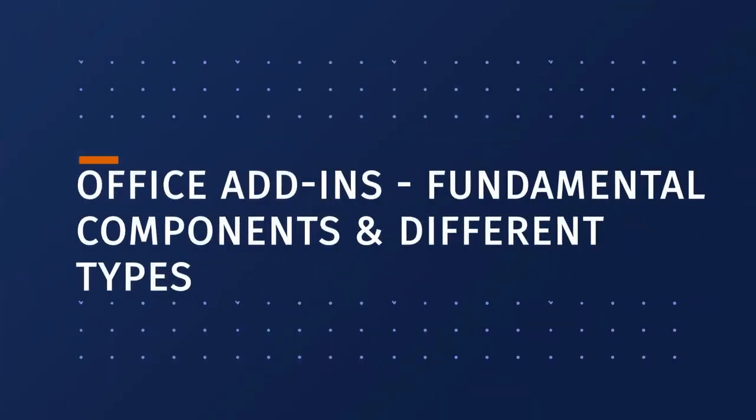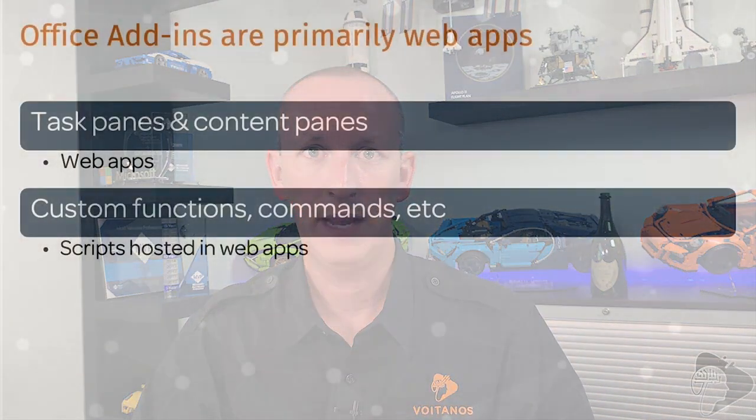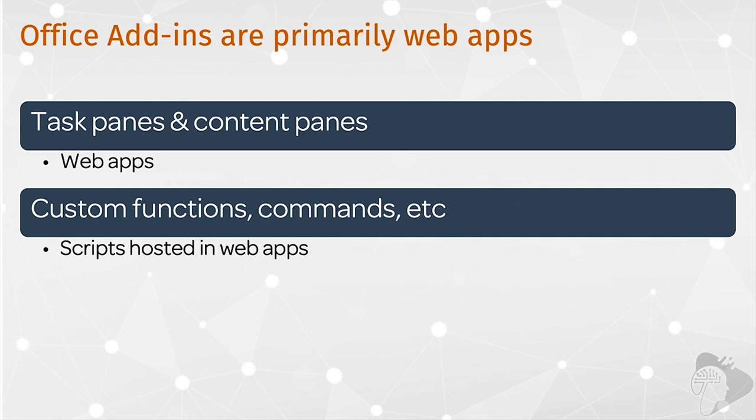In the next lesson, we'll dive into what the different Office add-ins are and some fundamental concepts. Office add-ins are implemented as web applications. Some types, such as task panes and content panes, are full-blown web apps. Other types of customizations, like custom functions and commands, are single script files hosted and loaded from an external web app. The exam will test you on your knowledge of the different types of add-ins and their capabilities.